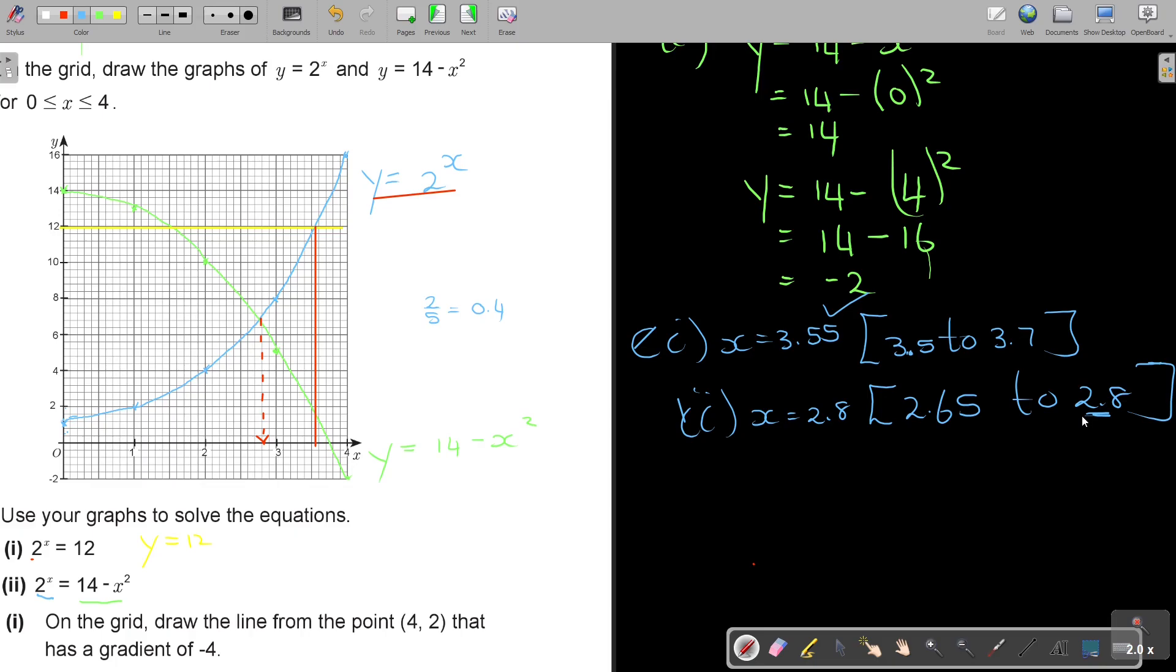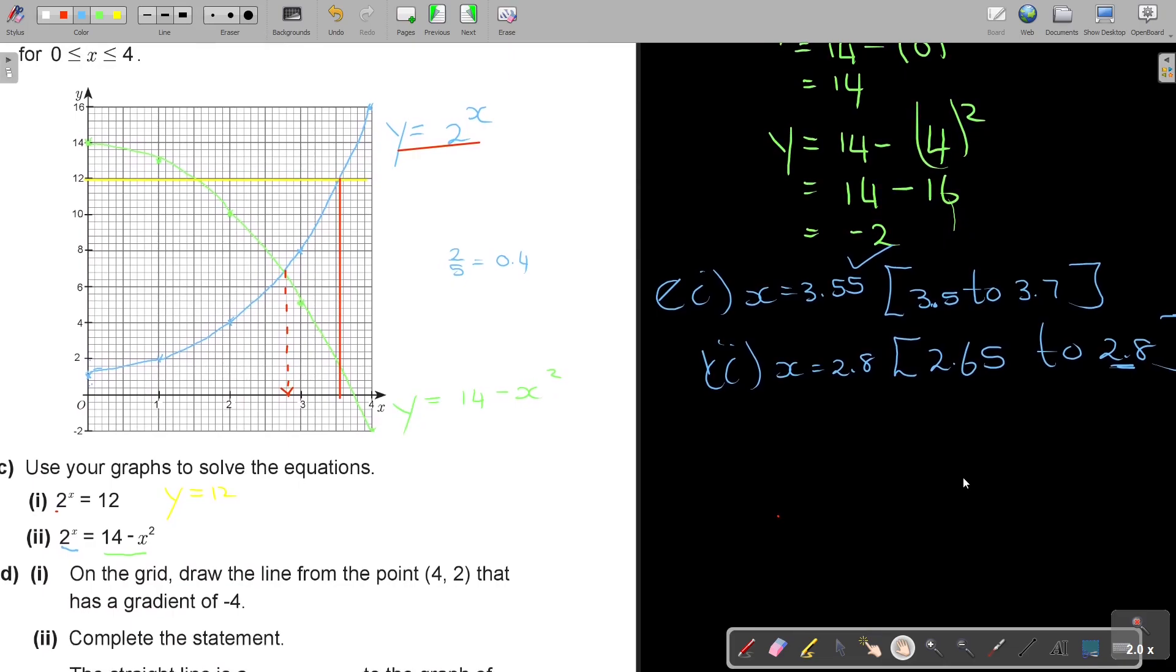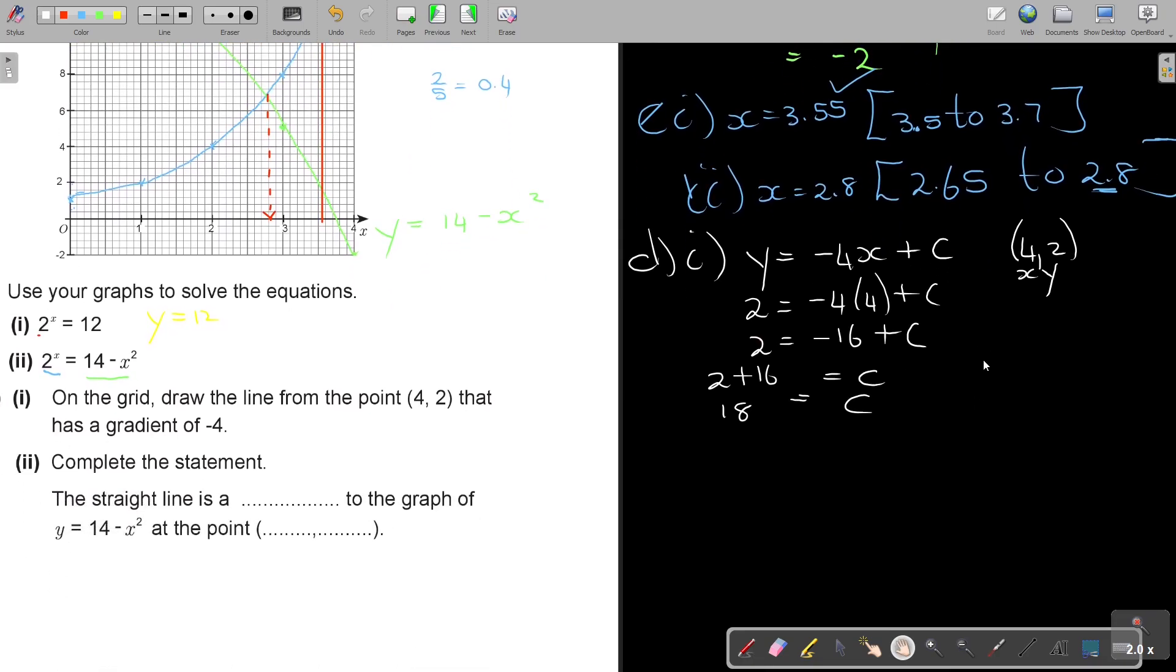So on the grid, draw the line from the point 4, 2 that has a gradient of negative 4. What you can do, I think it's best to first get the equation. So the gradient is negative 4. But I want to find the equation. I'm taking the point 4 and 2 and putting it in. So in the place of y, I put a 2. In the place of x, I put a 4. So 2 equals negative 16 plus c. C is 2 plus 16, so the value of c will be 18. Therefore my equation will be y equals negative 4x plus 18.